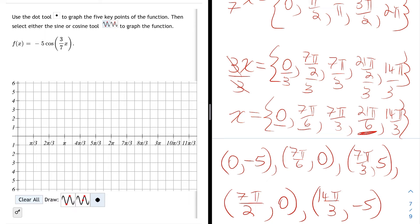Let's graph those 5 key points. I first select the dot tool underneath the graph, and then I plot (0, -5). I plot 7π/6, 0. 7π/6 is right after 6π/6, and 6π/6 is π, so 7π/6 is right after that.